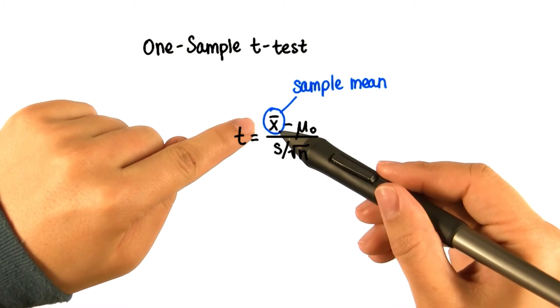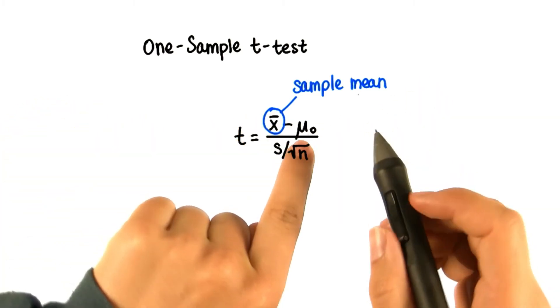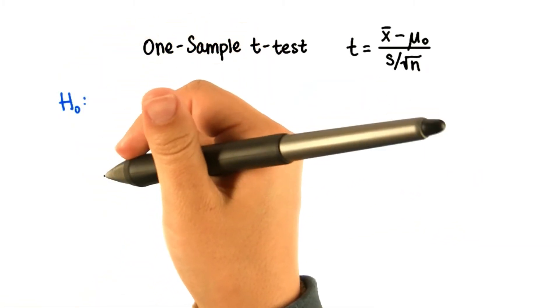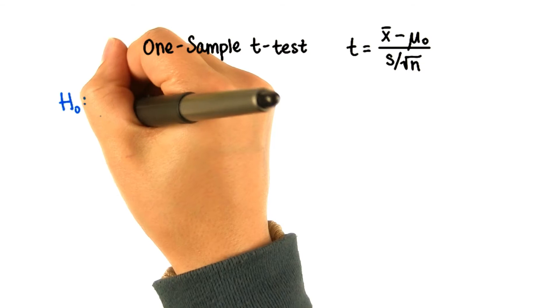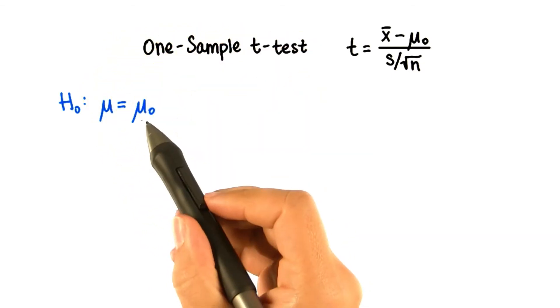We want to know if the population that this sample comes from is significantly different from the population with this mean. Therefore, the null hypothesis is that the population mean is equal to some specified value, μ₀.